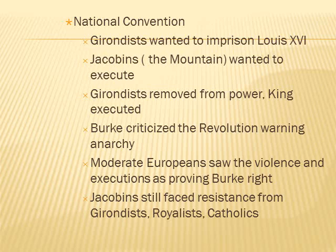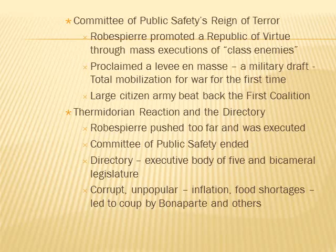Burke, the Englishman, criticized the revolution, warning it would lead to anarchy. Moderate Europeans saw the violence and executions as proving Burke right. The Jacobins still faced resistance from Girondins, Royalists, and Catholics as they tried to institute a more radical Republican French Revolution. The Committee of Public Safety was formed. Robespierre promoted a republic of virtue through mass executions of class enemies. He proclaimed a levée en masse — a military draft — with total mobilization for war for the first time. This large citizen army beat back the first coalition's mercenary armies. Then the Thermidorian Reaction: Robespierre pushed too far and was executed, and the Committee of Public Safety was ended.